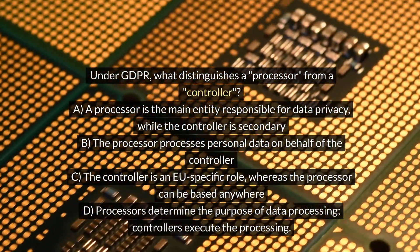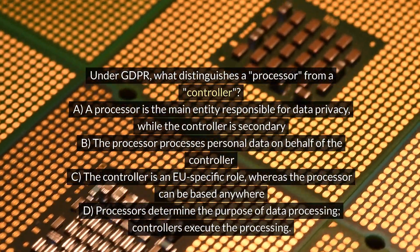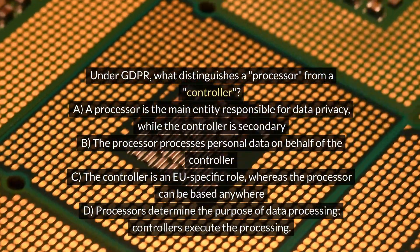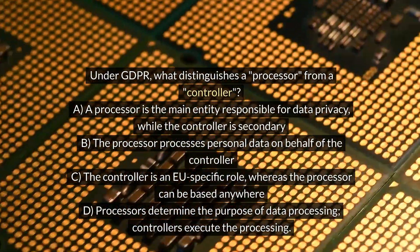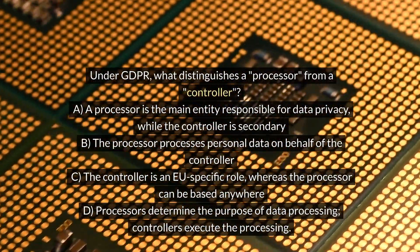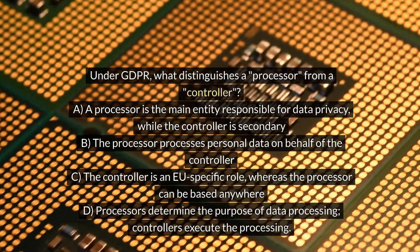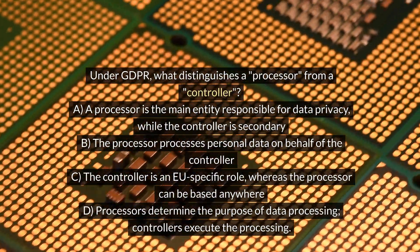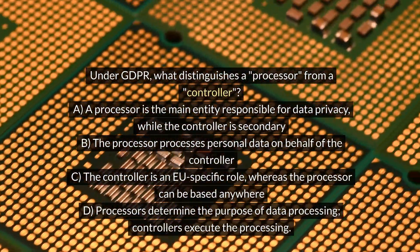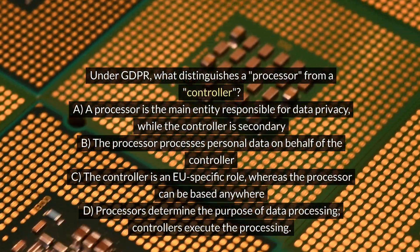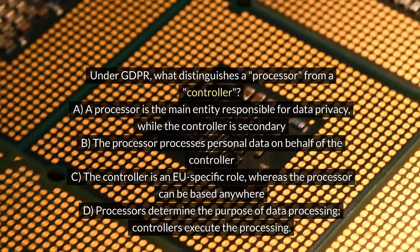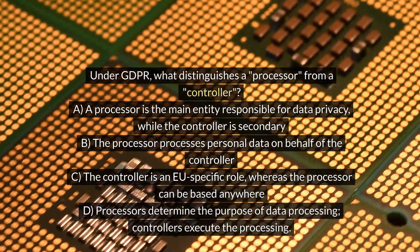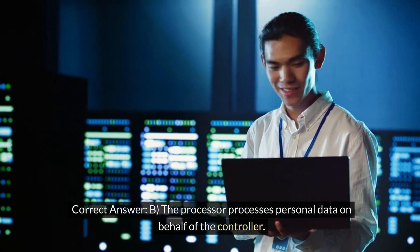Under GDPR, what distinguishes a processor from a controller? A. A processor is the main entity responsible for data privacy, while the controller is secondary. B. The processor processes personal data on behalf of the controller. C. The controller is an EU-specific role, whereas the processor can be based anywhere. D. Processors determine the purpose of data processing; controllers execute the processing. Correct answer: B. The processor processes personal data on behalf of the controller.